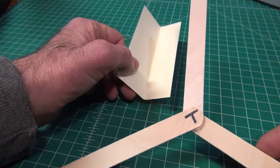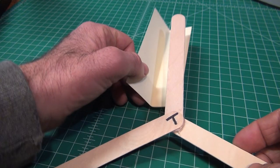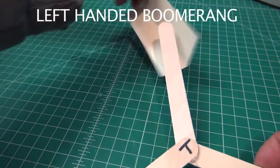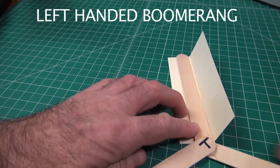If you're making a left-handed boomerang, the T is still up, the narrow part of the airfoil still goes under, but the fold and the wide part goes on the right.